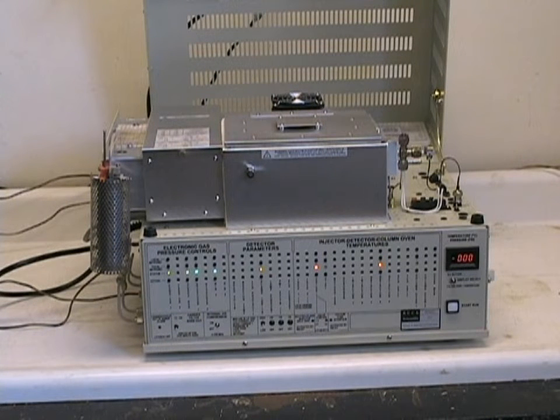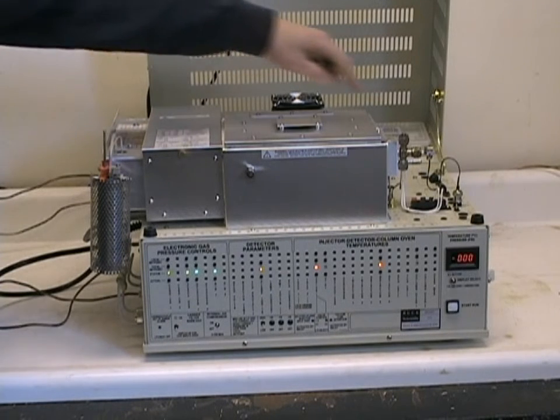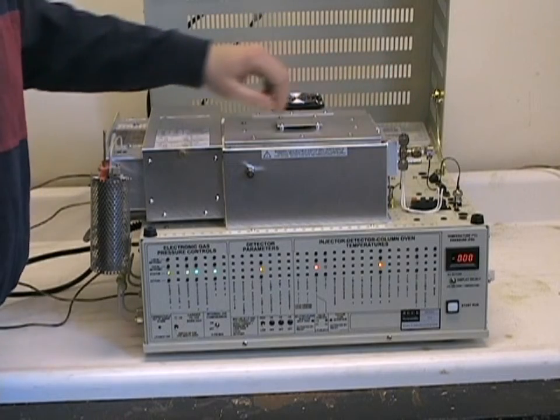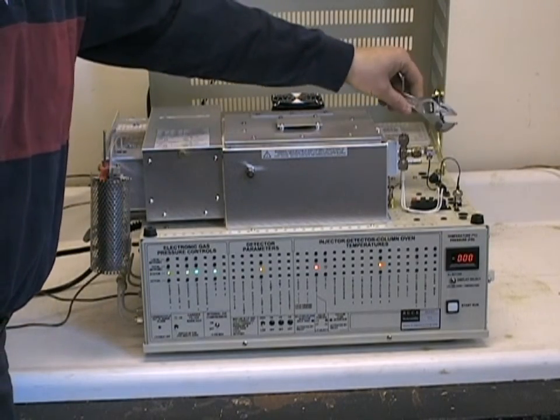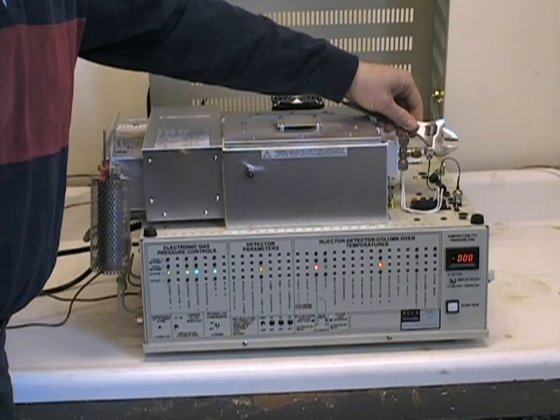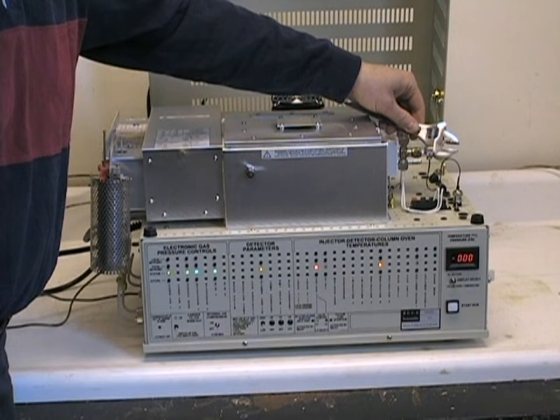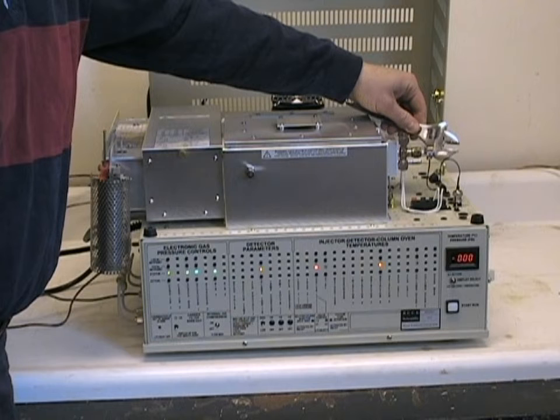The next thing to check prior to beginning our analysis is to make sure that we have steam forming at the end of the FID vent tube. Holding a piece of metal or a cold piece of glass at the end of that little steel tubing, you should see a little steam build up as we see here quite vigorously.